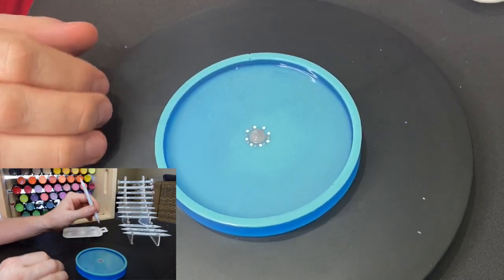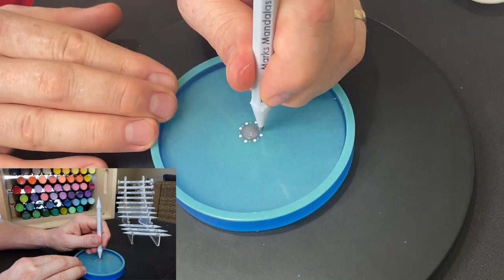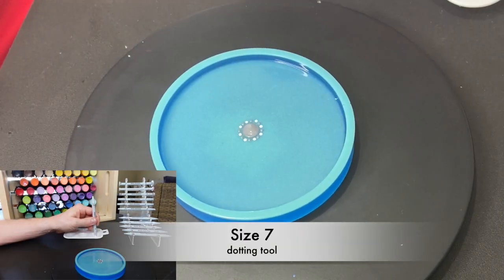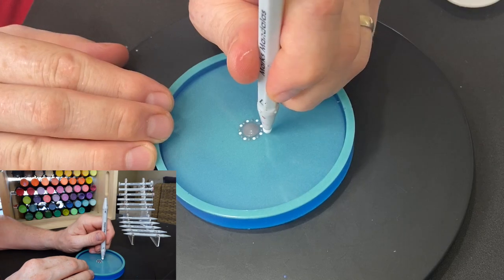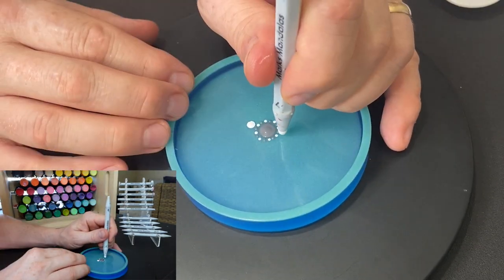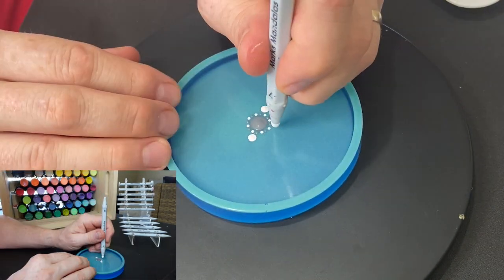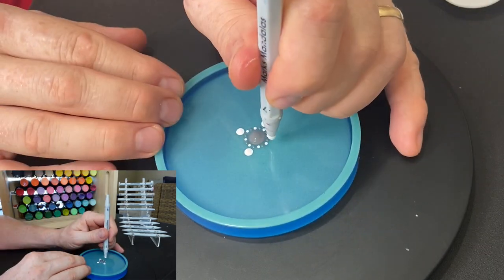This is going to be a 16 dot pattern so after I paint those first four dots I'm going to paint another dot in between each of those. Then I'm going to actually switch colors and paint another set of eight dots in between those dots.